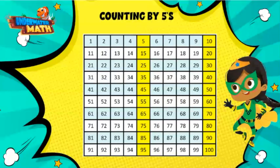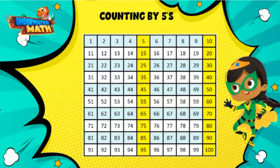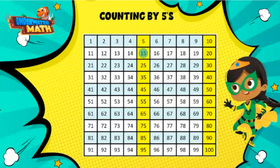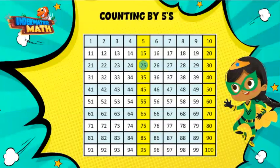The yellow highlighted portions on the number chart show the pattern of counting by fives. If we start at the number 15 and continue the pattern, it will look like this: 20, 25, 30, 35.